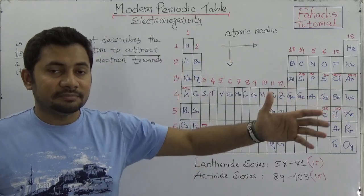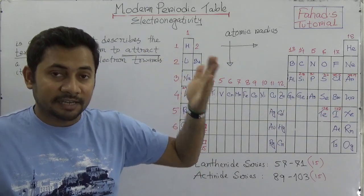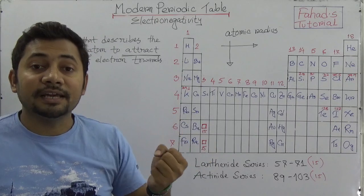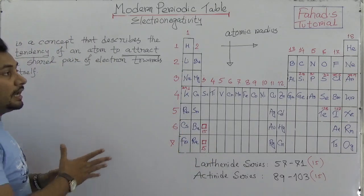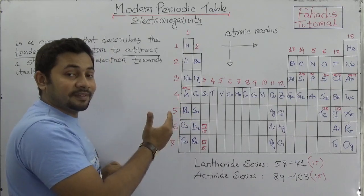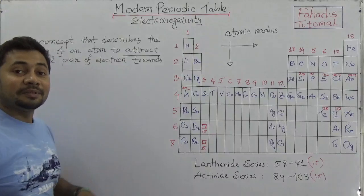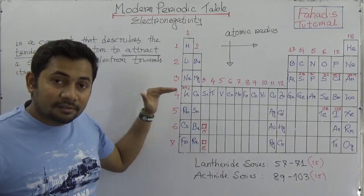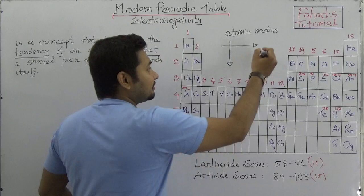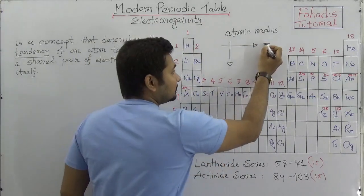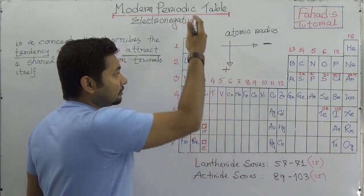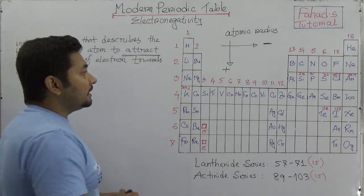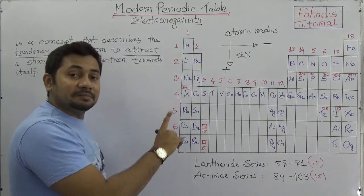More electron affinity means a similar attitude of more electronegativity. As you have studied, electron affinity describes how likely an atom wants to have electrons. Since electronegativity is a periodic property, it has a periodic relationship with atomic radius. Atomic radius decreases as you go across a period from left to right, and increases as you go down a group. Electronegativity is the vice versa of this.